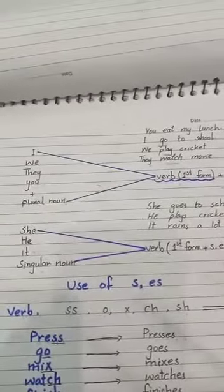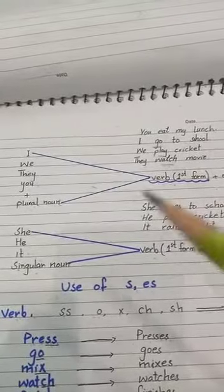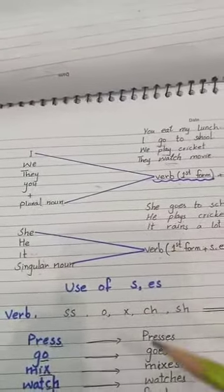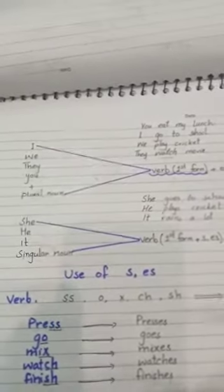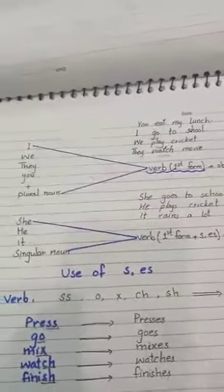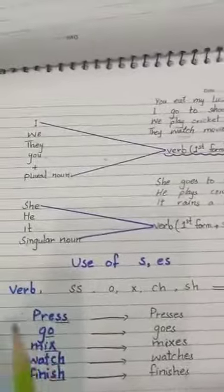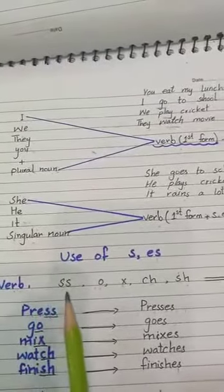I hope you understand where we add 's' and where we use first form. After this, we get confused about where to add 'es' and where to add 's'. So see now.